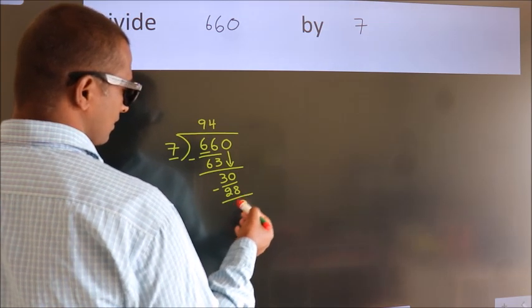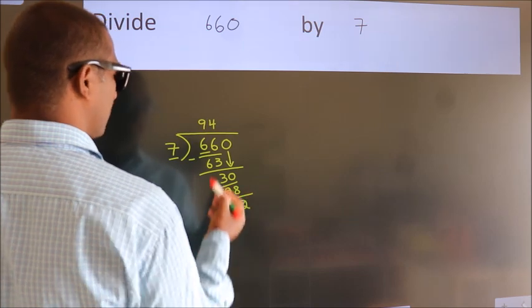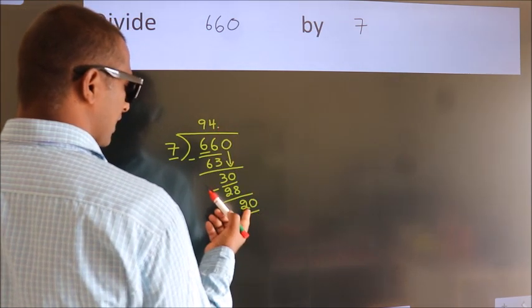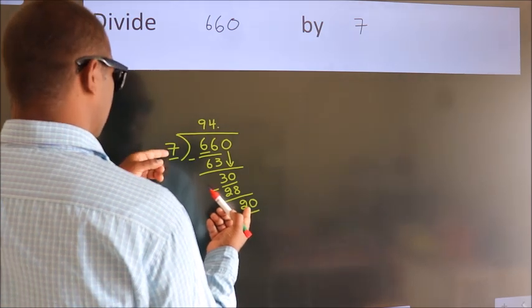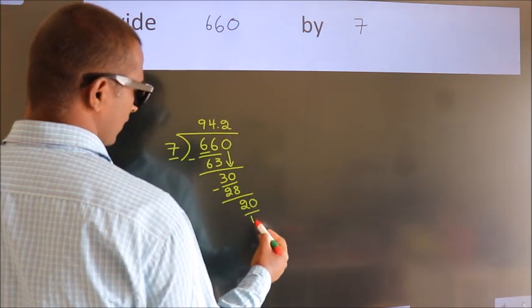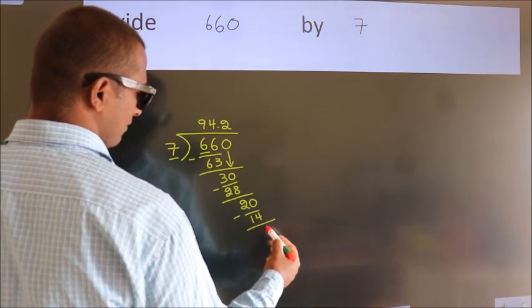After this, no more numbers to bring down. So, what we do is, we put dot, take 0. So, 20. A number close to 20 in 7 table is 7 twos, 14. Now, we subtract. We get 6.